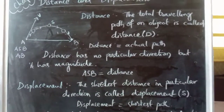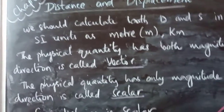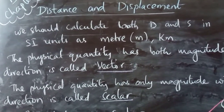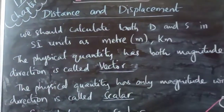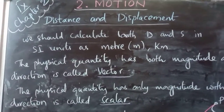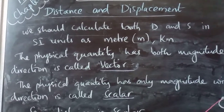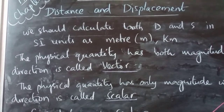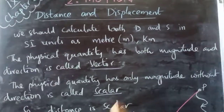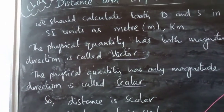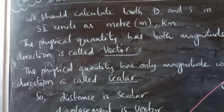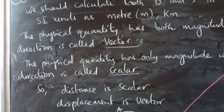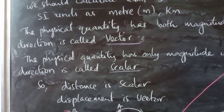This is the difference between distance and displacement. Both distance and displacement have the same units — we calculate them in SI units as meter or kilometer. Both are lengths. Distance is a longer length and displacement is also a length but shorter. However, when we compare them, distance has only magnitude without a particular direction, while displacement has both magnitude and direction.